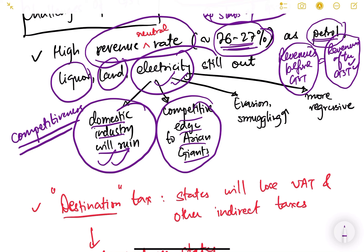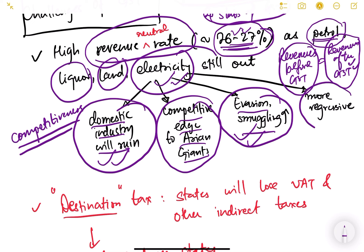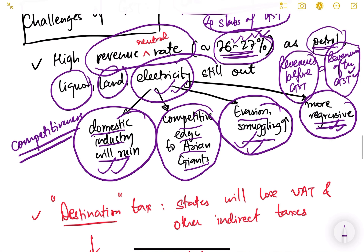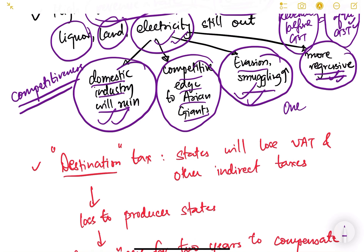High tax rates give Asian manufacturing giants a competitive edge. Evasion and smuggling will increase because people will want to avoid such high taxes — selling without invoicing and similar practices. It also becomes more regressive, meaning poor people face a greater tax burden. So this is a key challenge of GST. Ultimately, the goal is to slowly move toward a single rate structure without losing revenue — but this remains a significant challenge.